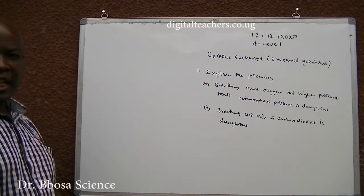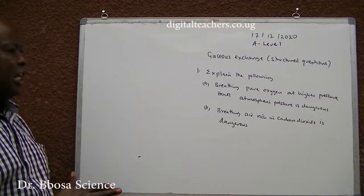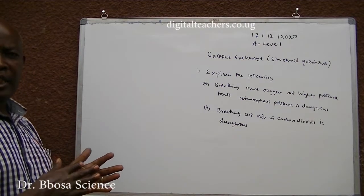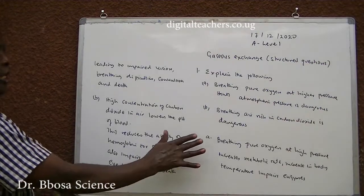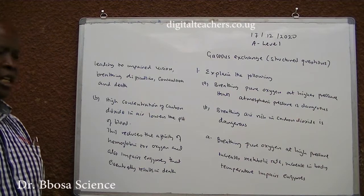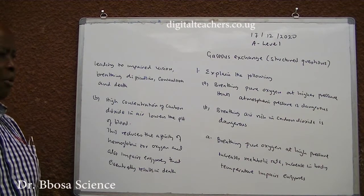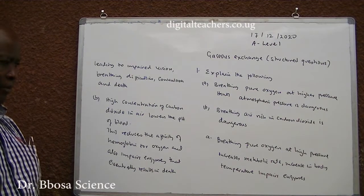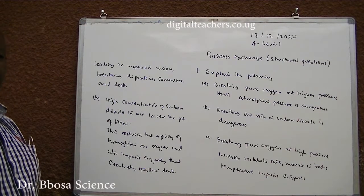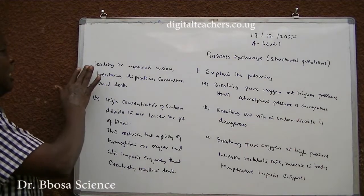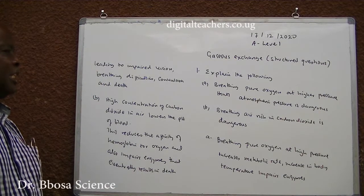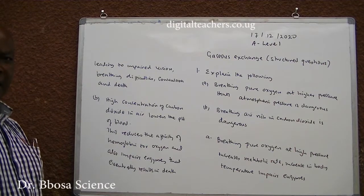B: Breathing air rich in carbon dioxide is dangerous. You can pause and answer. A: Breathing pure oxygen at high pressure increases metabolic rate. Increase in temperature impairs enzymes leading to impaired vision, breathing difficulties, convulsion and death.